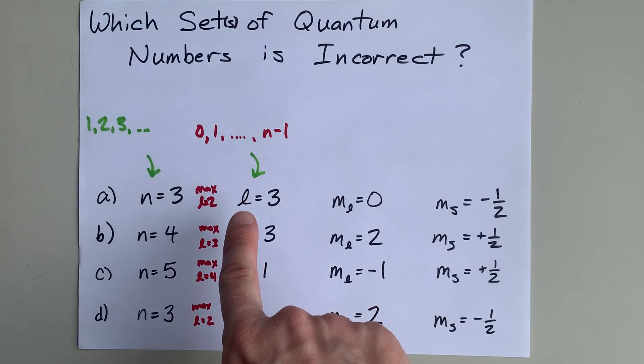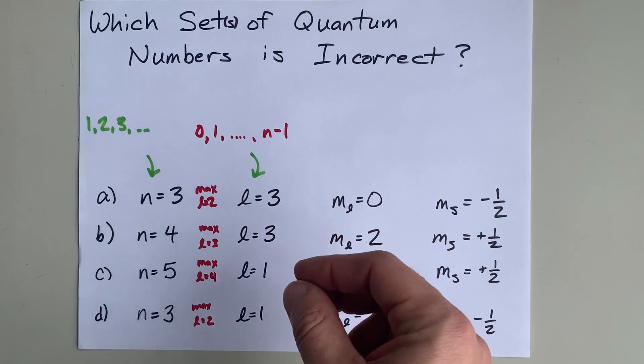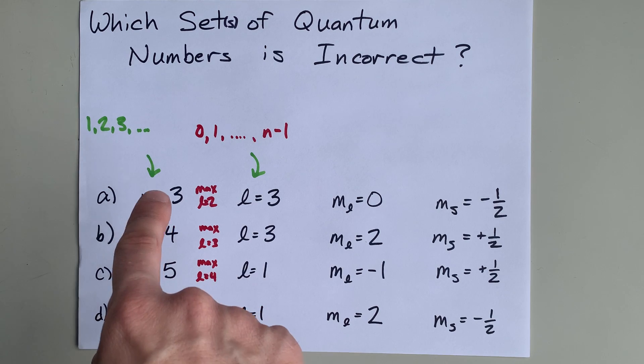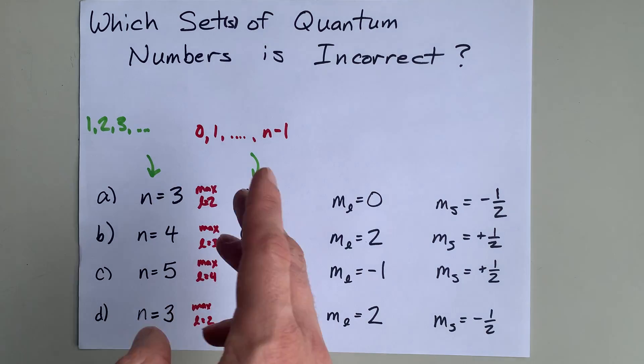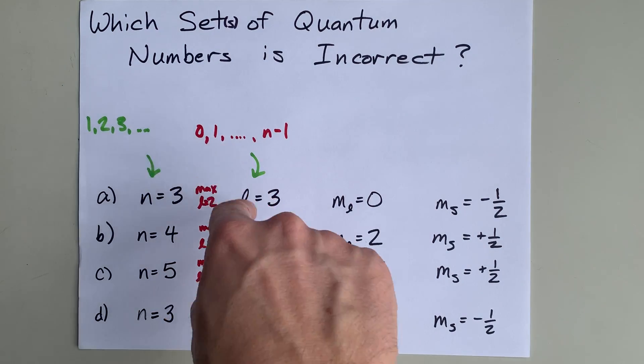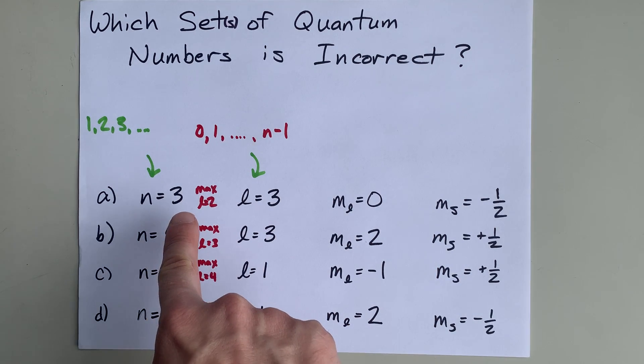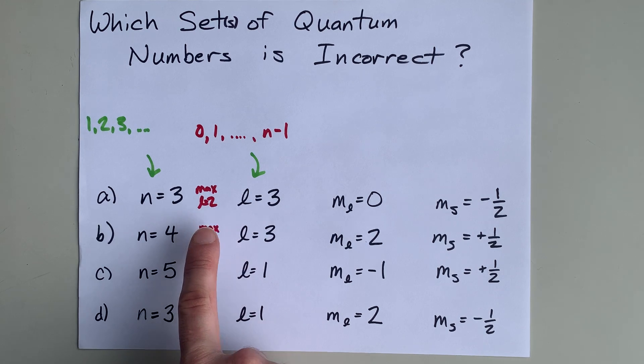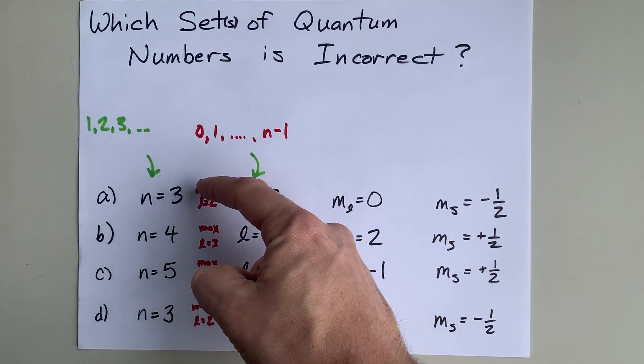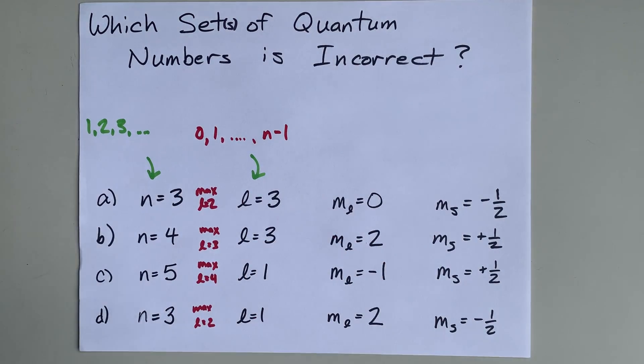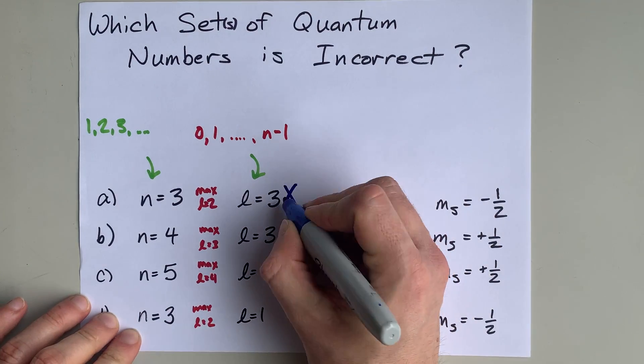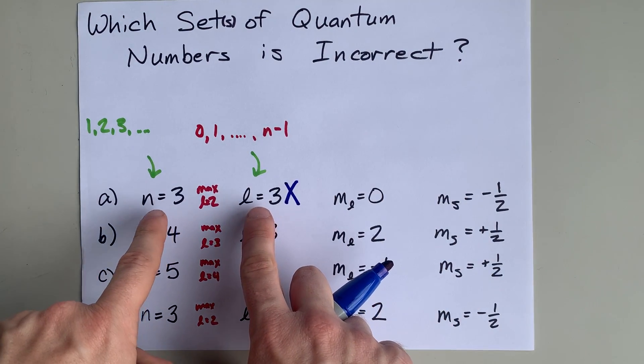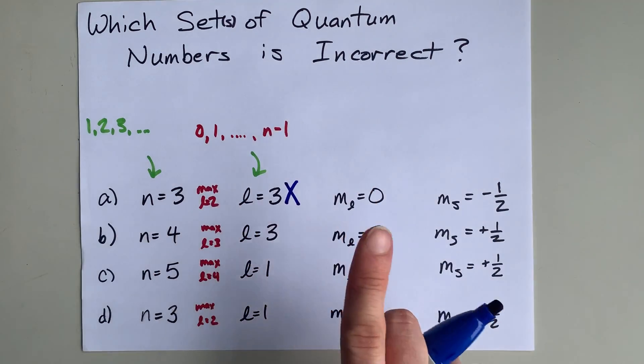But then the values of L that you're allowed to have depend on your N. So for an electron in the third energy level, the L is allowed to be 0 or 1, and you count all the way up to 1 less than this. So for N equals 3, the maximum L is 2. You're allowed to have an L of 0, 1, or 2 here. An L of 3 is not allowed. And so if you have an electron where L and N are the same, that's not okay.